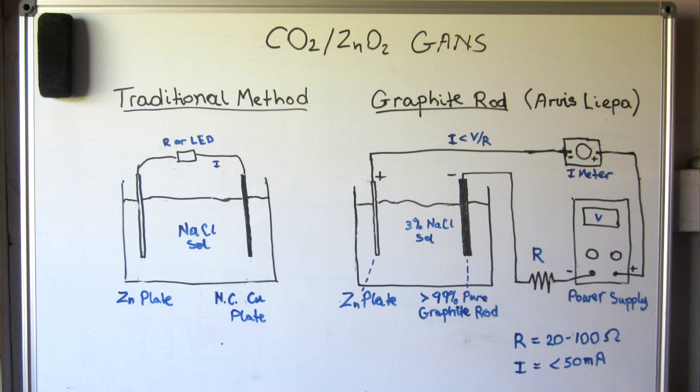In the case of say a 50 milliamp current, the zinc oxide phase kicks in after about six or seven hours I found. Cleaning the carbon rod delays that onset but eventually even with cleaning the rod the second phase starts happening. With that introduction let's have a look at some examples.